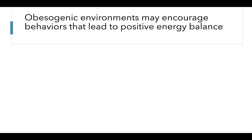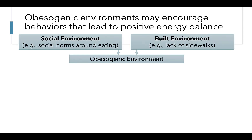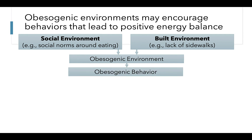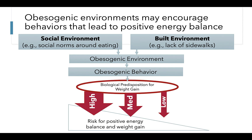These social and environmental factors contribute to this idea of an obesogenic environment. This environment facilitates obesogenic behaviors that promote weight gain, such as overconsumption of high energy density foods, inactivity, high levels of stress, and poor sleep. What ultimately determines our susceptibility to the features of our obesogenic environments is our biological propensity for weight gain. Those with higher biological propensity for weight gain are most likely to experience positive energy balance, weight gain, and obesity when faced with these obesogenic environments.